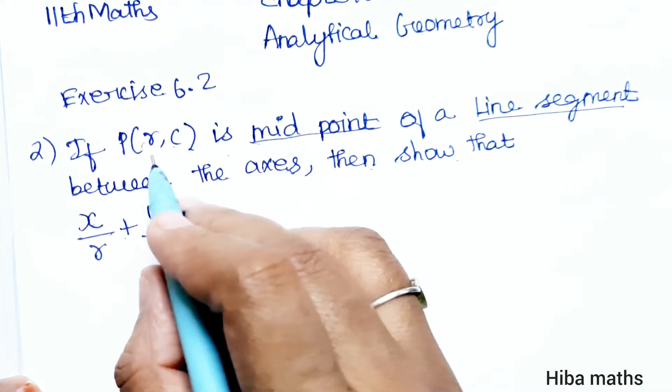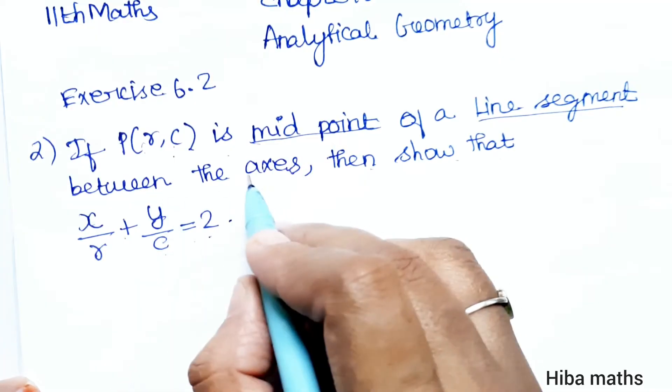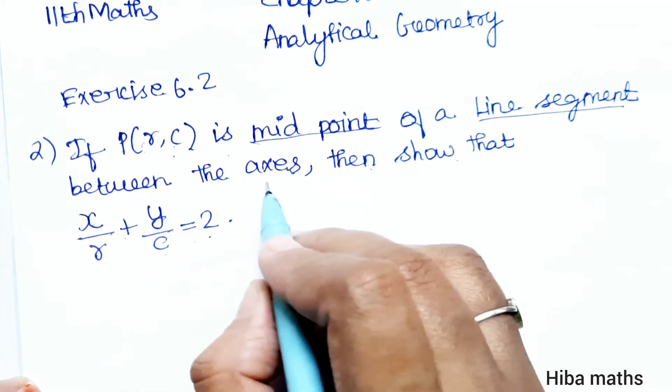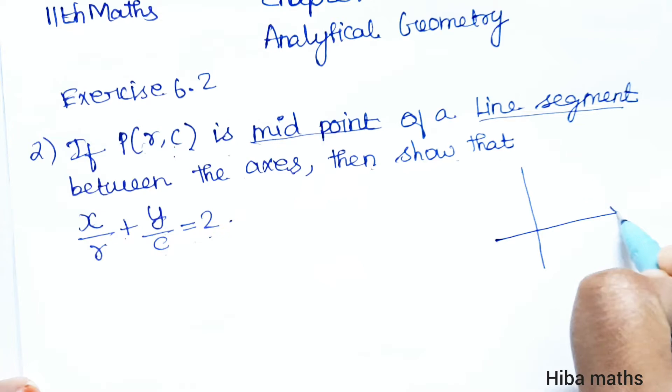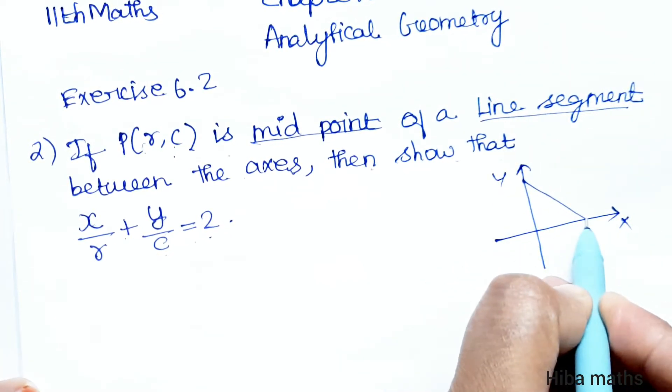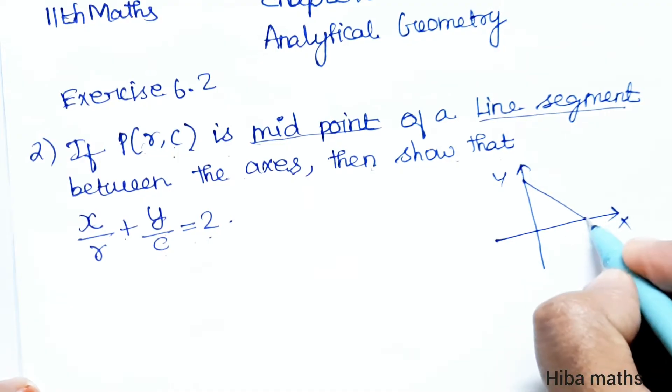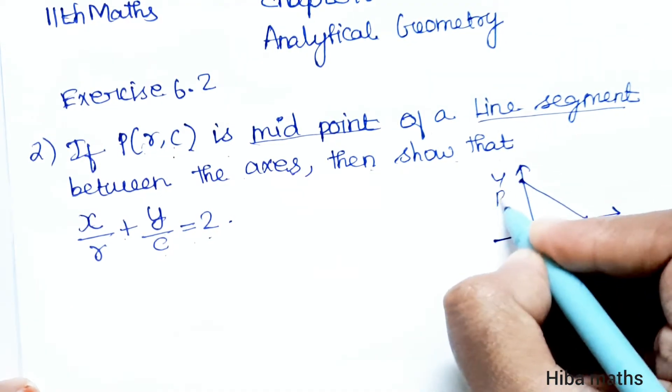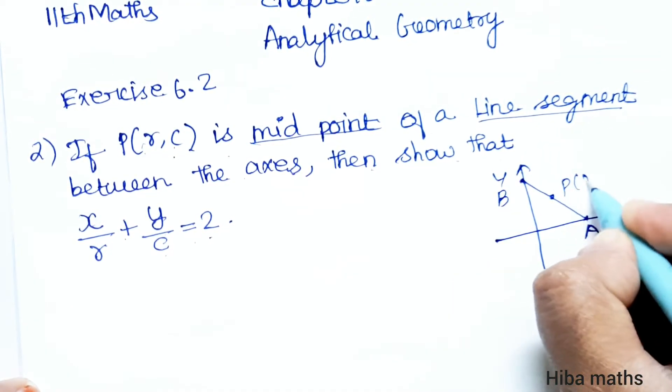One line segment midpoint is r,c and the line segment is between the axes. Assume the line is between the axes with endpoints at A and B. This midpoint is r,c.